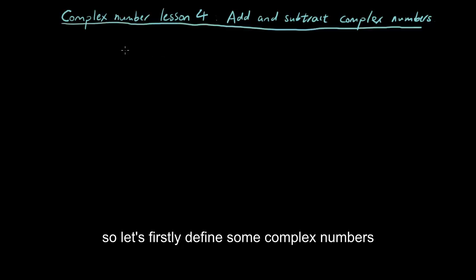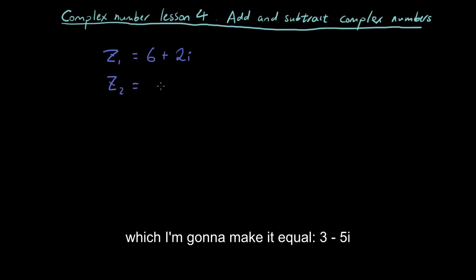So let's firstly define some complex numbers. So I'm going to have complex number 1, z1, which I'm going to make it equal 6 plus 2i, and then I'm going to have z2, which I'm going to make it equal 3 minus 5i.